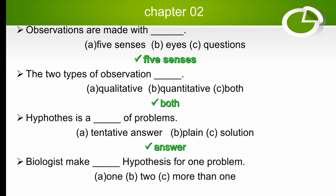Biologists make how many hypotheses for one problem? The options are one, two, or more than one. Biologists make more than one hypothesis for one problem, so the right option is C.